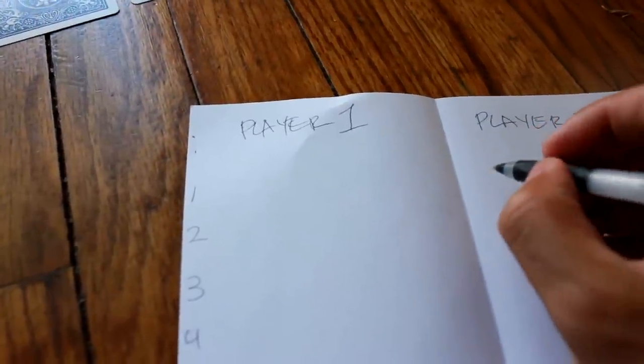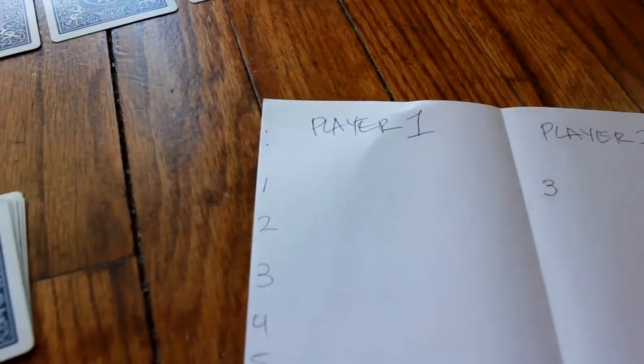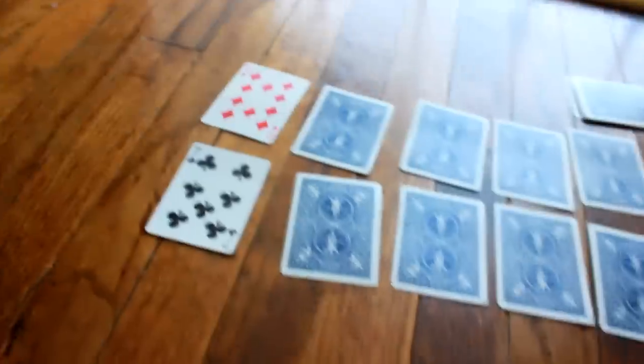For example, if the higher card is a 7 and the lower card is a 2, then the difference will be 5. Thus, the winner should write 5 on their side of the piece of paper.